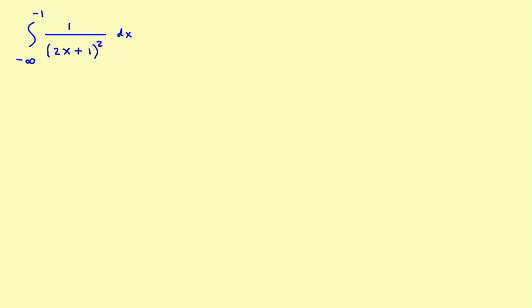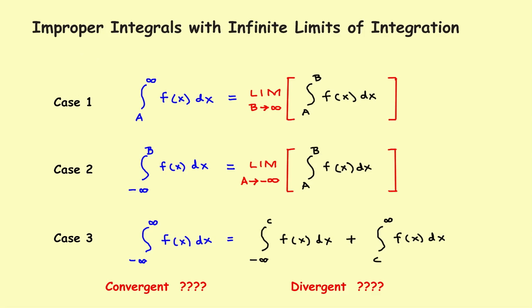Let's go back and take a quick look at the rules to see what we've had before. If you haven't done it, I would definitely watch the first three videos so you'll see how we got to this point. In the first three videos it was a case one problem where you went from some fixed number A off to a positive infinity to the right, and you used the top rule.